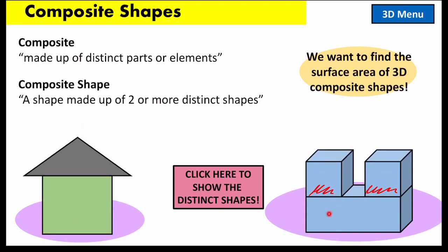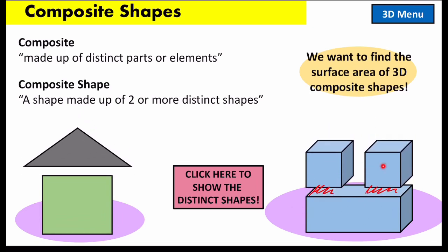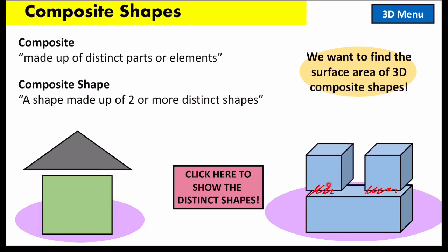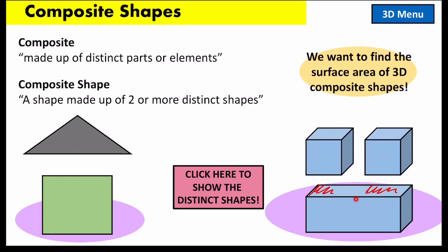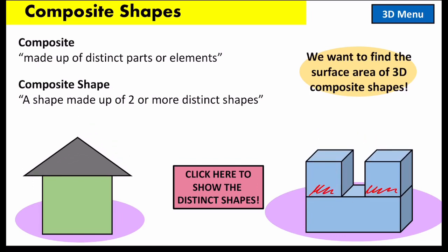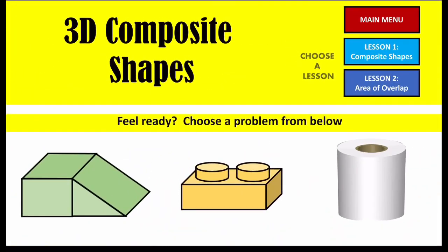So I would solve the rectangular prism, I would solve these two cubes, and then I would make sure I subtract the area underneath. That's what we call our area of overlap.